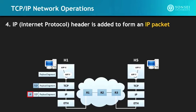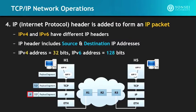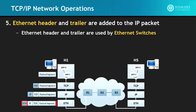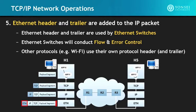Then the IP header is added to form an IP packet. IPv4 and IPv6 have different IP headers; the IP header includes the source address and the destination address — IPv4 is 32 bits, and IPv6 is 128 bits. Then the Ethernet header and trailer are added to the IP packet, which are used by Ethernet switches to conduct flow and error control. Other protocols such as Wi-Fi will use their own protocol header and trailer.